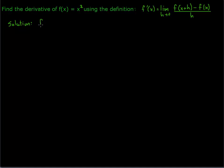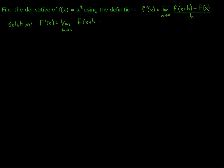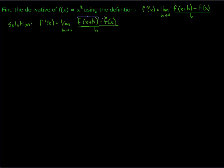So the definition says that our derivative is, in fact, the limit as h goes to 0 of f of x plus h minus f of x, all divided by h. Now the key here is we need to figure out f of x plus h, and then f of x.